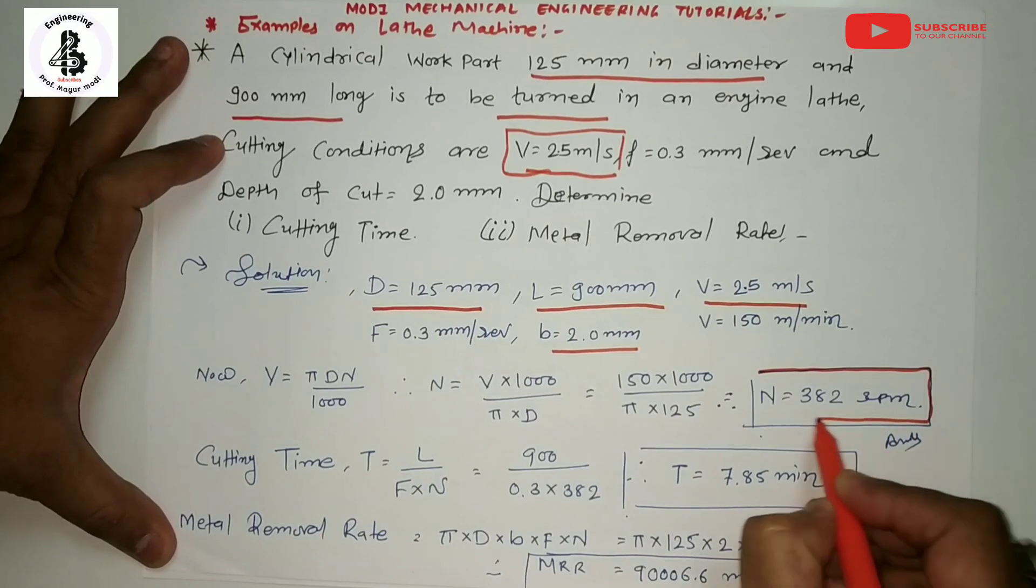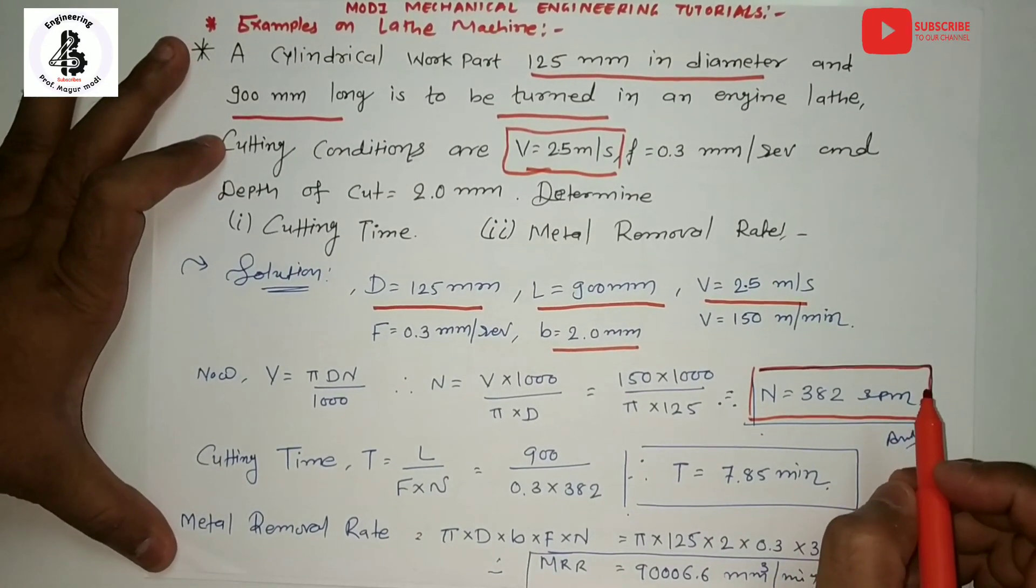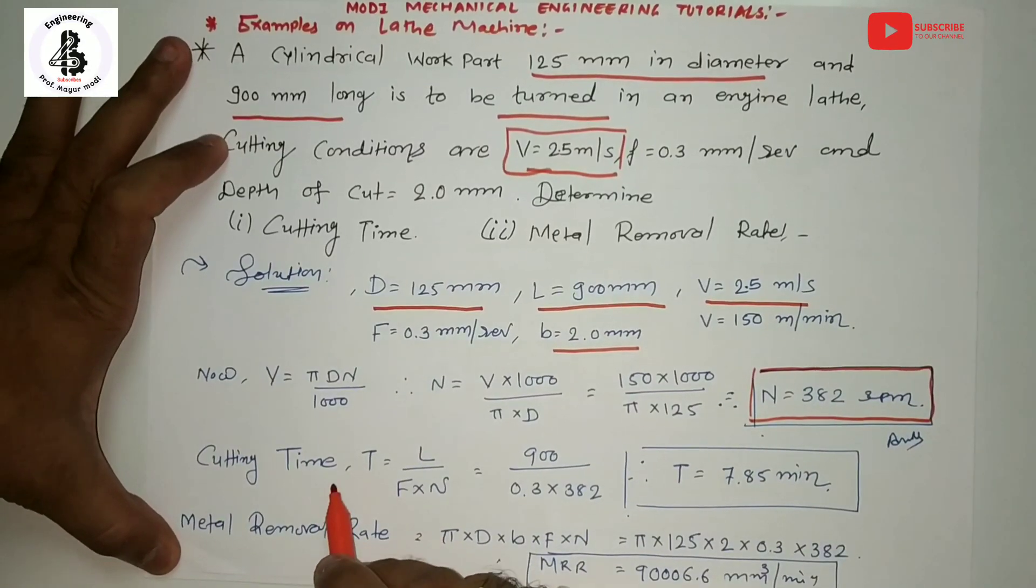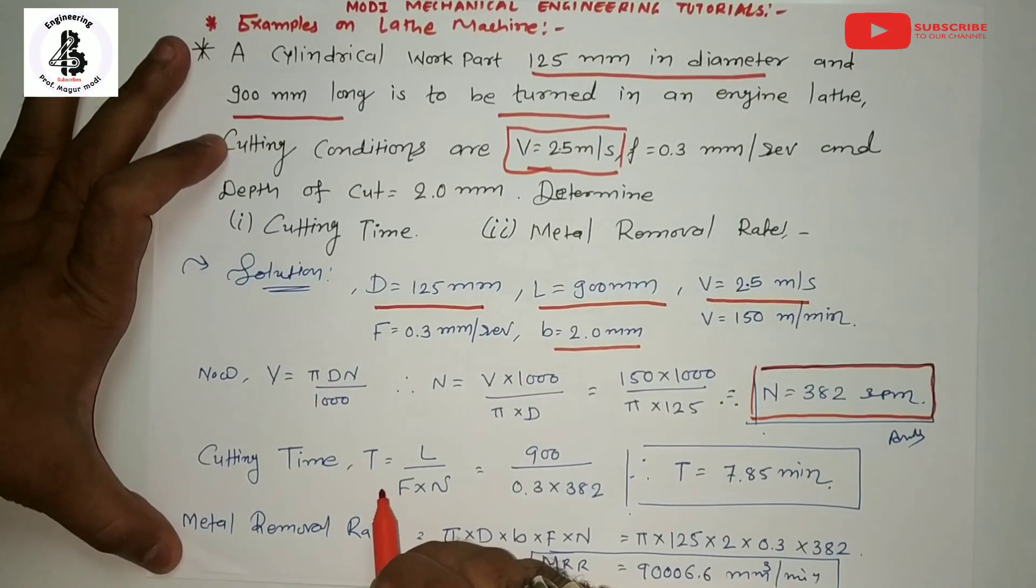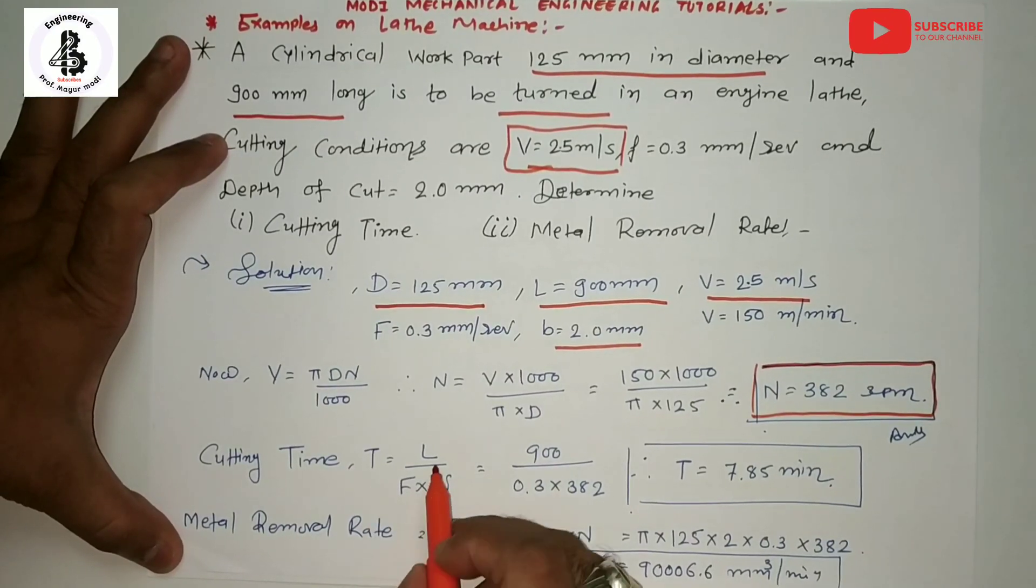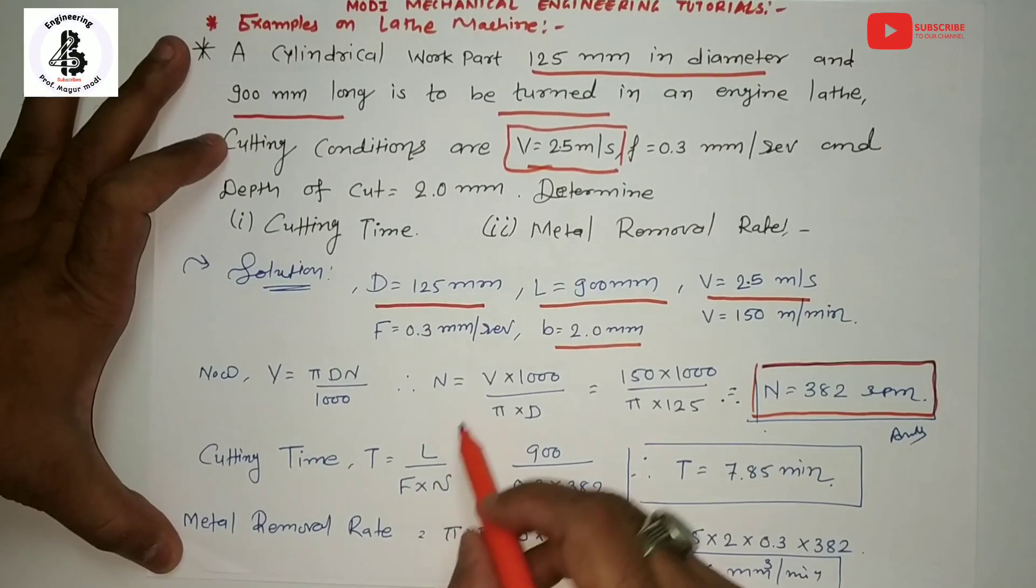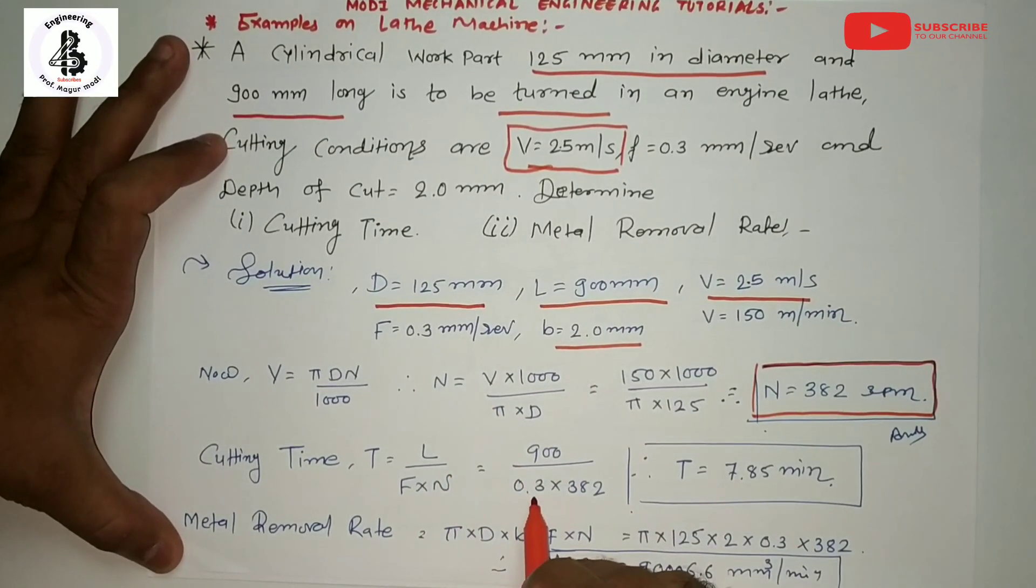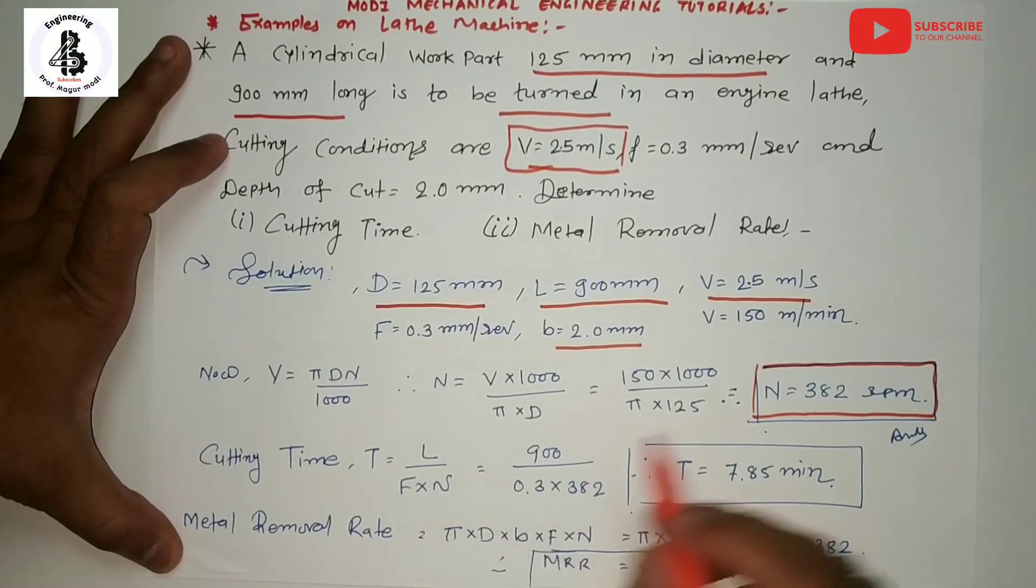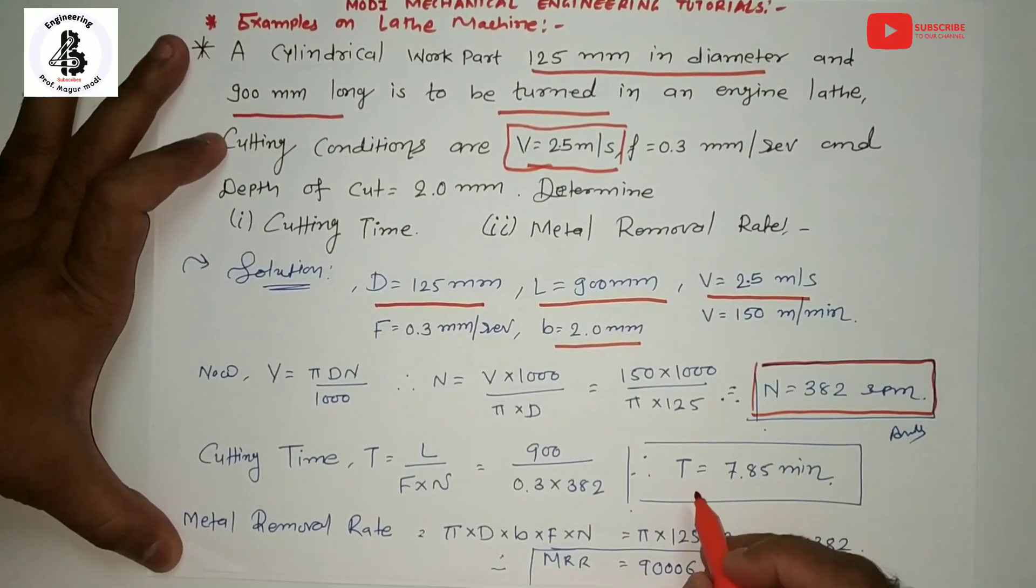Now cutting time, that will be given in my description links. T = L/(F×N), so L = 900 mm, F = 0.3 mm per revolution, and N = 382 from answer number 1.